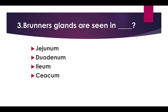Brunner's glands are seen in. Options: Jejunum, Duodenum, Ileum, and Cecum. Answer: Duodenum.